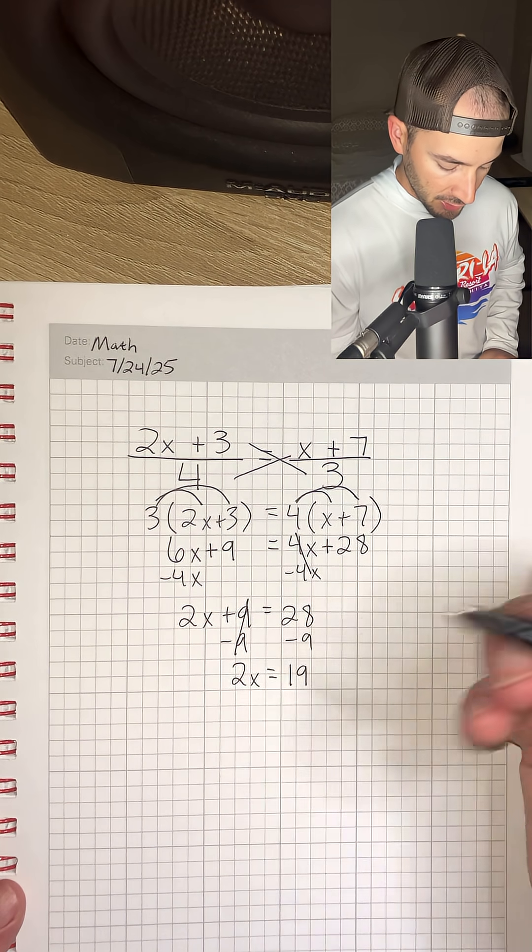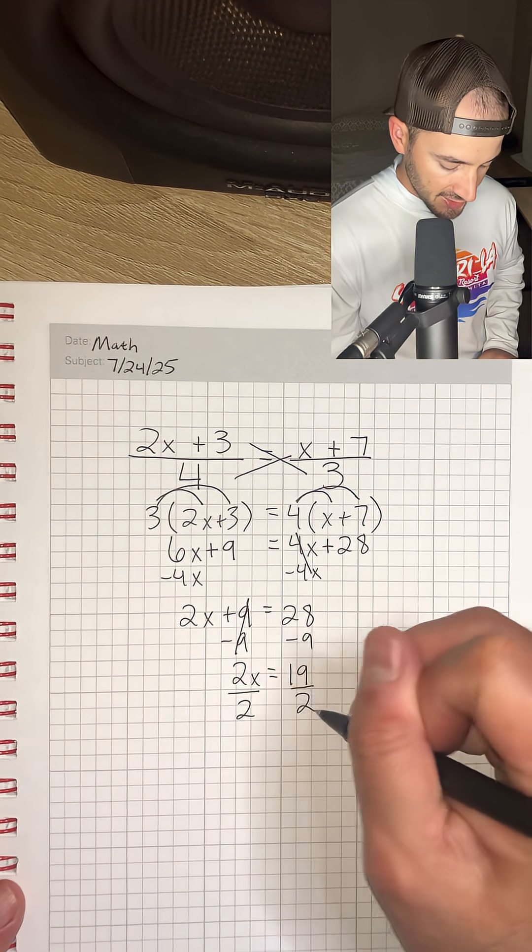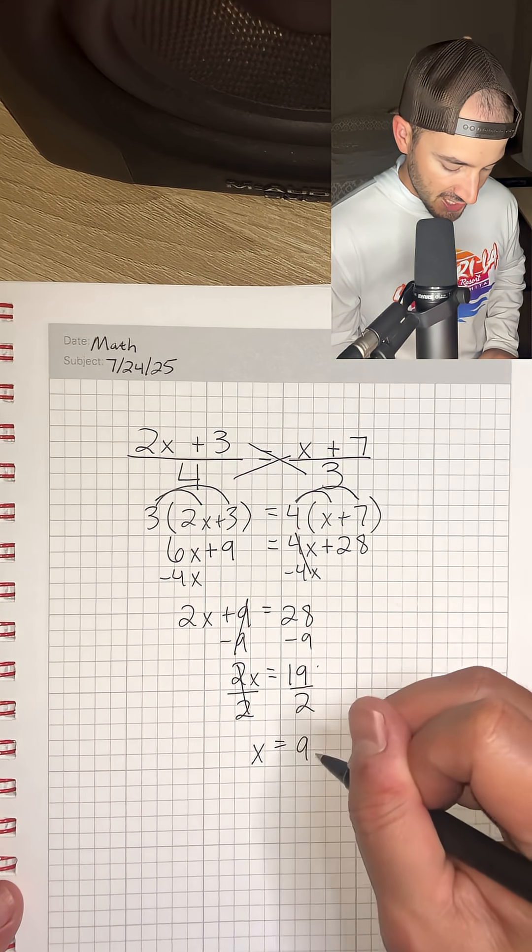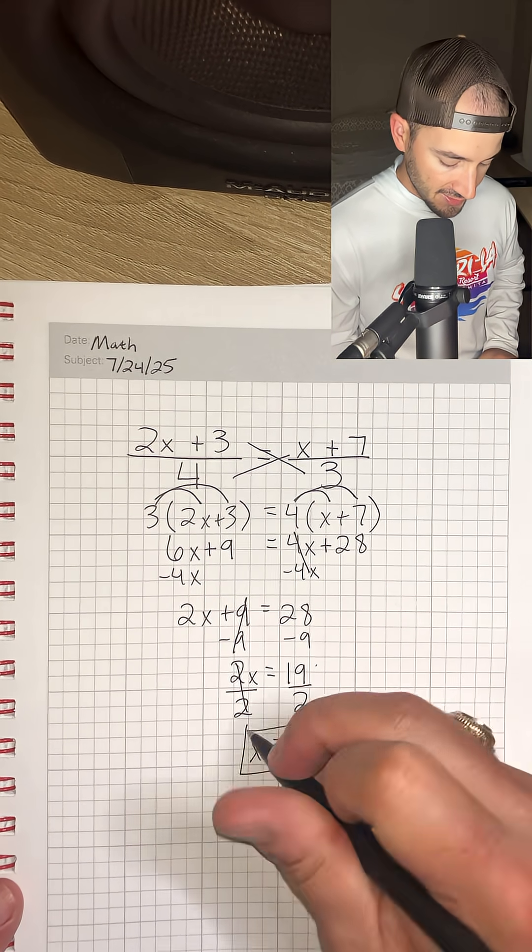Then we can just divide by 2 on both sides to get x is equal to 19 divided by 2, which is 9.5. So that is our answer. Thank you.